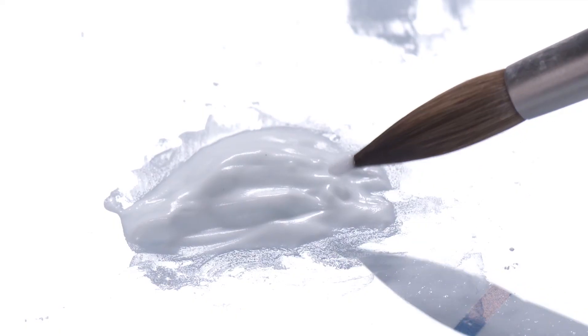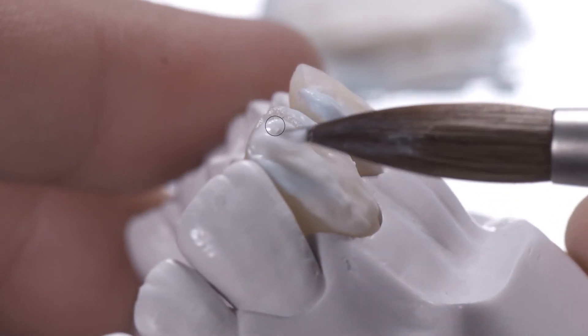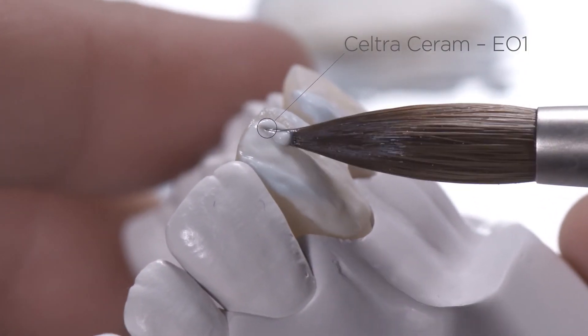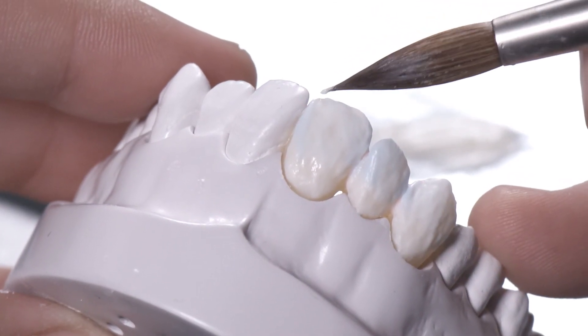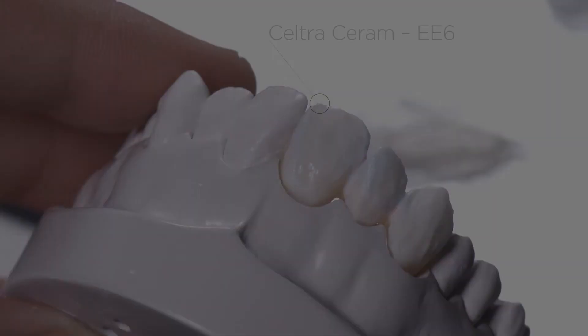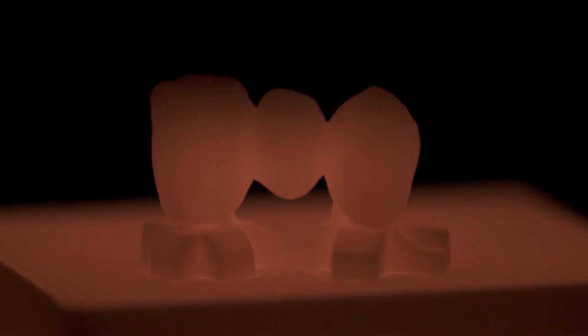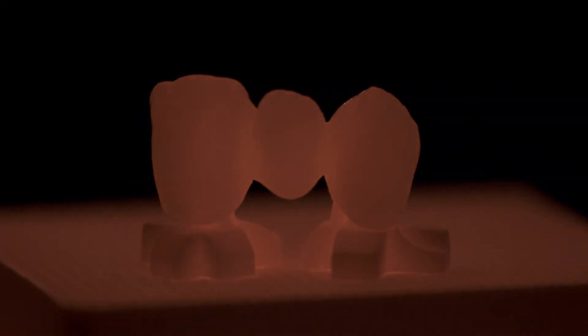Support the mesial and distal ridges with Seltra Ceram Enamel Effect EE5. In the central labial area, add a thin layer of the neutral enamel Opal EO1. Finalize the incisal edges with Enamel Effect EE6. After the ceramic firing, finalize the shape and create the desired surface texture.